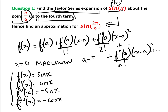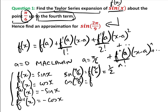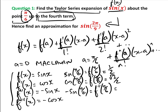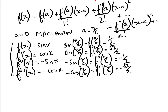We're expanding around the point a equals pi over 6. So we want sine of pi over 6, which is f of a equals one half. We need cos of pi over 6, which is f dashed of pi over 6, equal to root 3 over 2. Then f double-dashed of pi over 6 is minus sine of pi over 6, which is minus one half. Finally, f triple-dashed of pi over 6 is minus cos of pi over 6, which equals minus root 3 over 2.